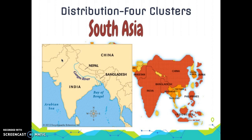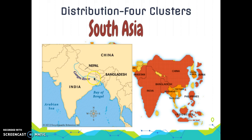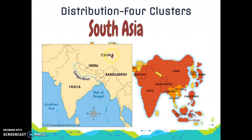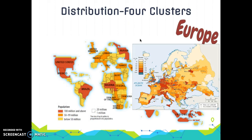The second cluster is South Asia, where another one-fourth of the world's population lives. India is the major player here. Population is concentrated along the plains of the Ganges River and near India's two coastlines — the Arabian Sea and the Bay of Bengal. Most people living in India are farmers living in rural areas.